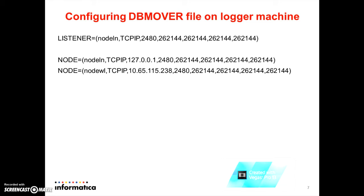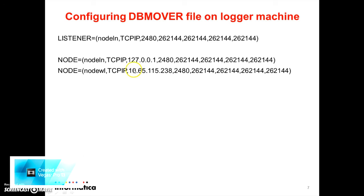Configuring the DBMover file on the logger machine. On the logger machine, specify a node statement pointing to the listener running on the Windows machine. This is the node statement for the listener running on the Linux machine, and this is the node statement for the listener running on the Windows machine. This is the IP address of the Windows machine. You have to specify the Windows machine IP address in this node statement.